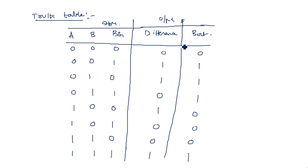Completing the truth table: for difference, the values are 0, 1, 1, 0, 1, 0, 0, 1. For borrow out, the values are 0, 0, 0, 1, 0, 0, 1, 1.